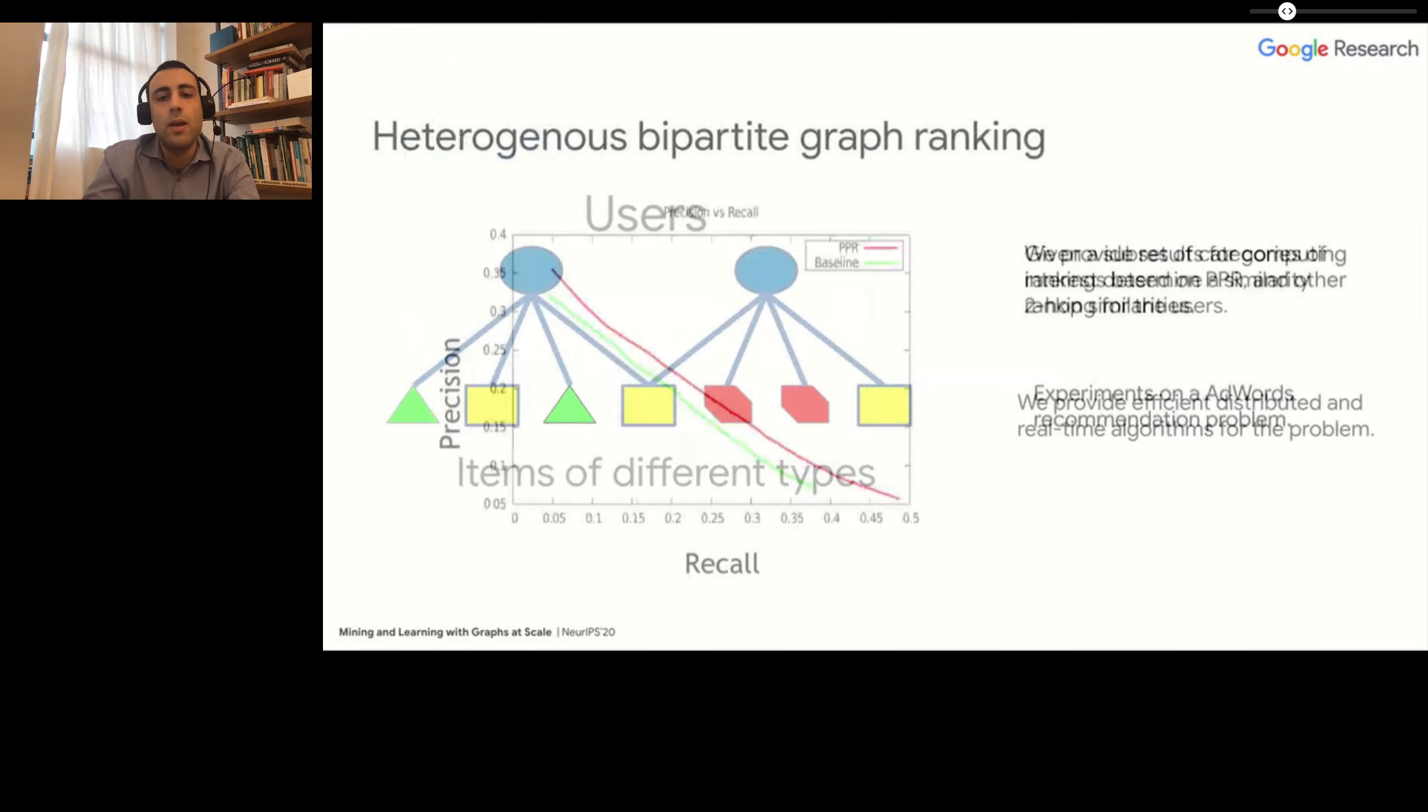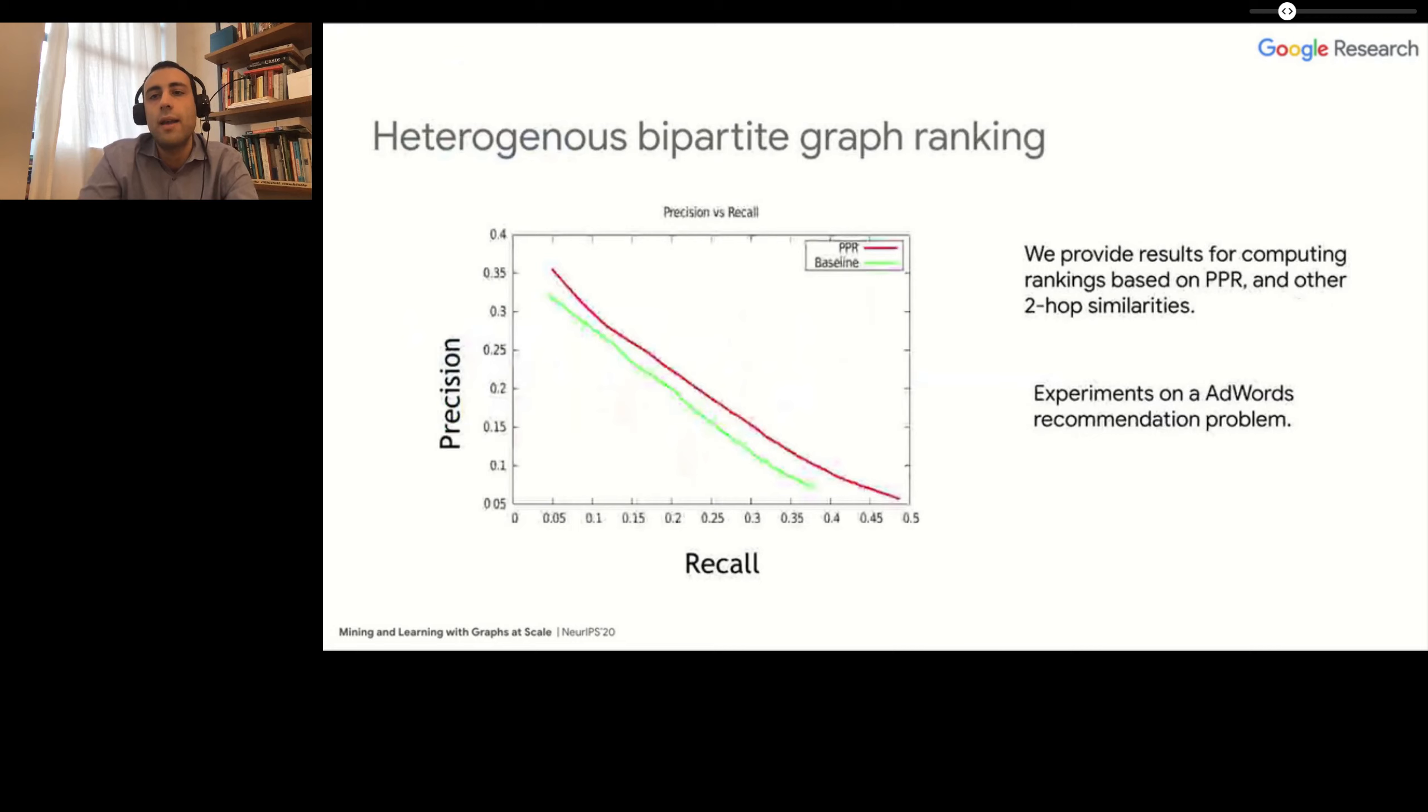This is what we study in this paper, and we define efficient algorithms that are able to compute the personalized PageRank vectors and other similarities in these heterogeneous bipartite graphs. We show that not only our algorithms have provable approximation guarantees, but also they provide good experimental results, including in a real recommendation problem inside AdWords. If you are interested and want more details, please contact me or check out our paper.